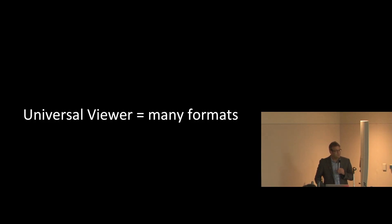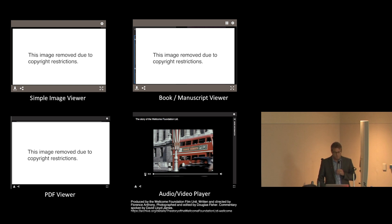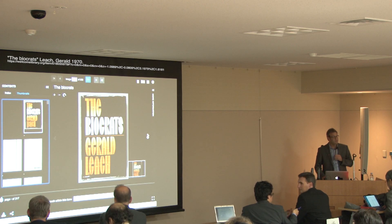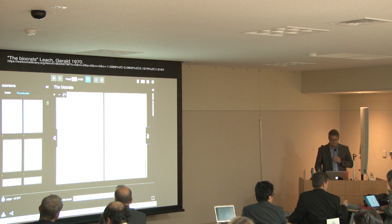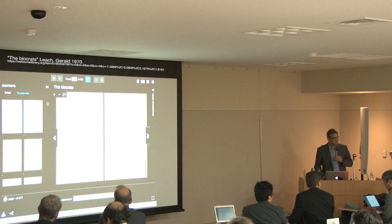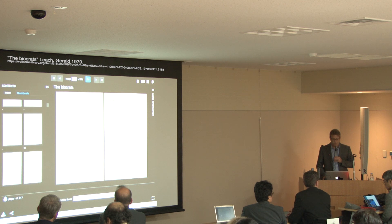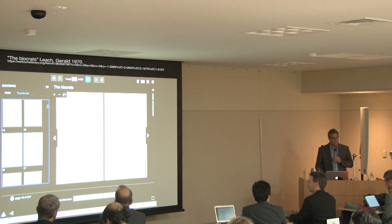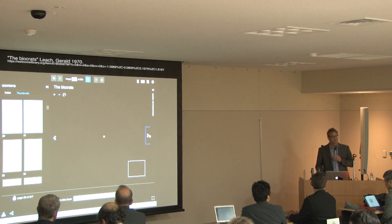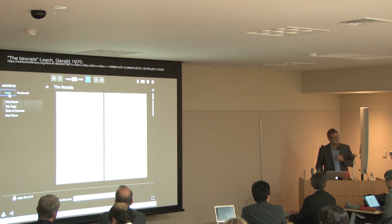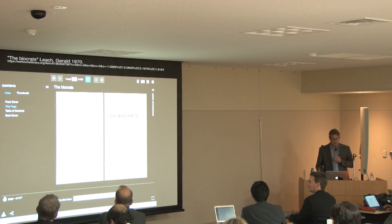The Universal Viewer is called universal because it can display many formats: simple images, books, manuscripts, PDFs, audio, and video streaming from the web. Its book-viewing capabilities are especially impressive — you can navigate using thumbnails or other navigational controls, view metadata, and search within the book, allowing you to leap forward to search results zoomed in on the text found through your search.